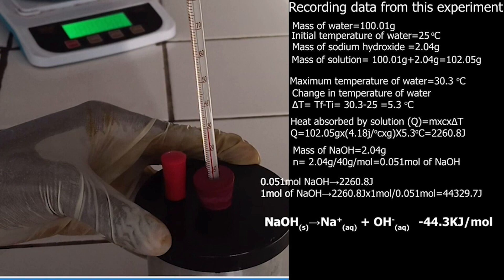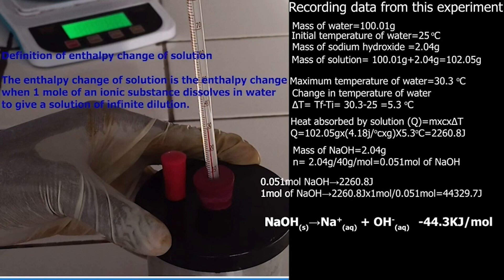By converting joules into kilojoules, when 1 mole of sodium hydroxide are dissolved completely in water, it releases 44.3 kilojoules. The negative sign on energy indicates that the reaction or process is exothermic. Enthalpy change of solution of sodium hydroxide is equal to negative 44.3 kilojoules per mole.